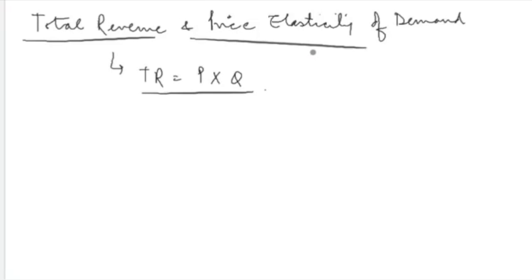The relationship between total revenue and price elasticity of demand is dependent on the demand curve in the market — how elastic is the market. We are going to discuss this relationship: how much is the total revenue dependent on the elasticity of demand? Let's try to understand this through a graph.